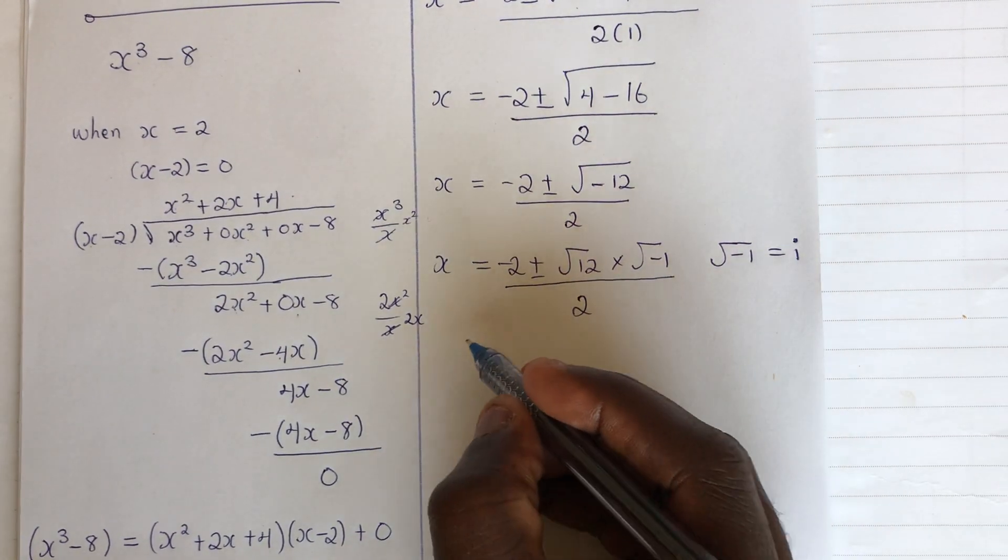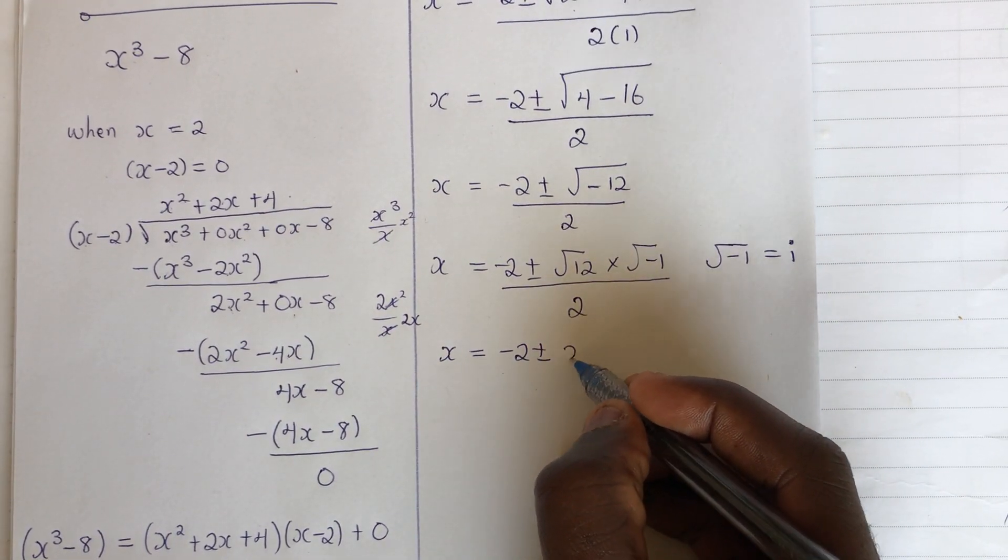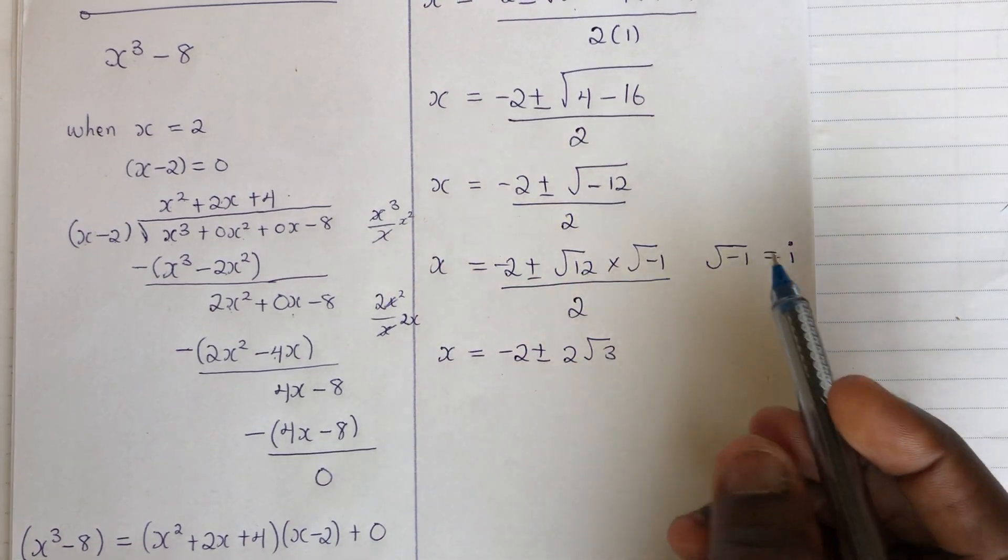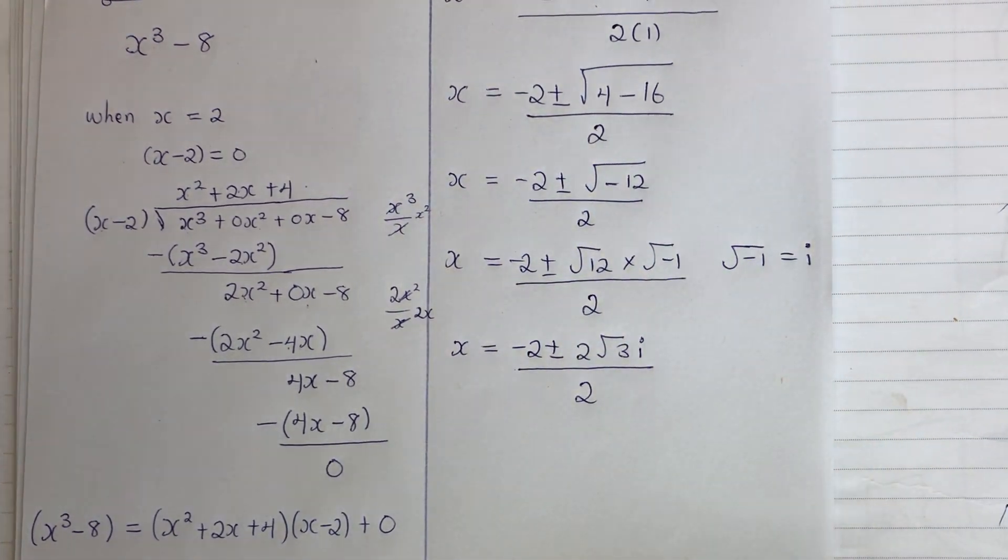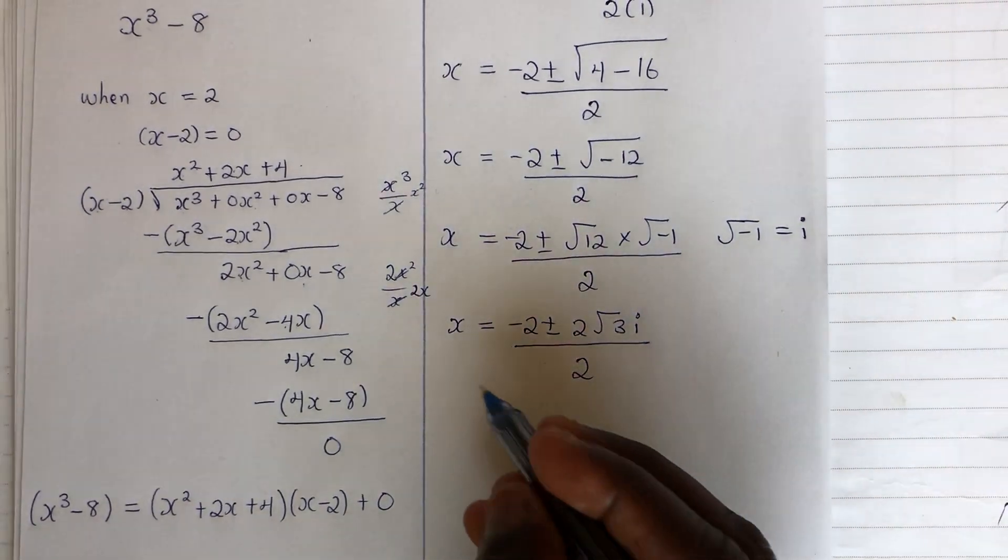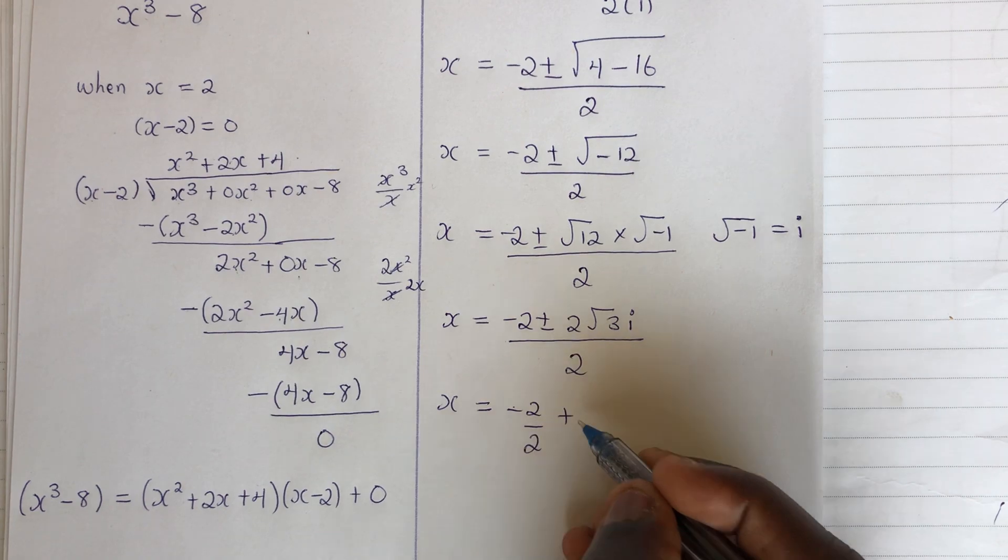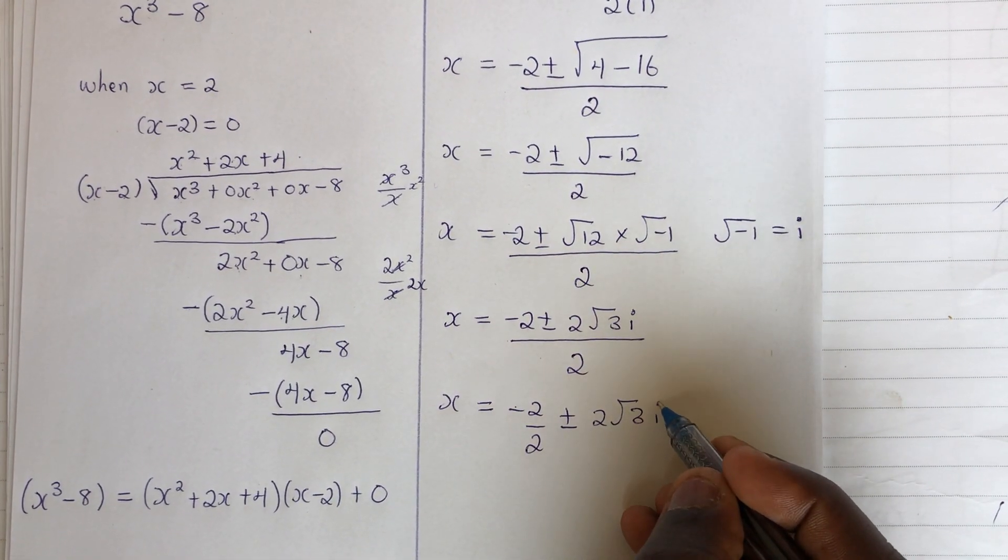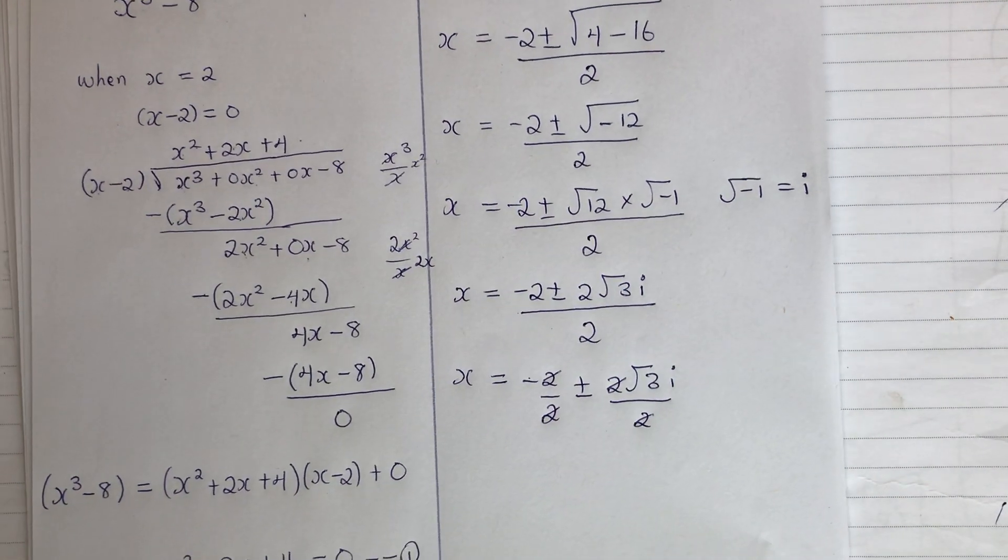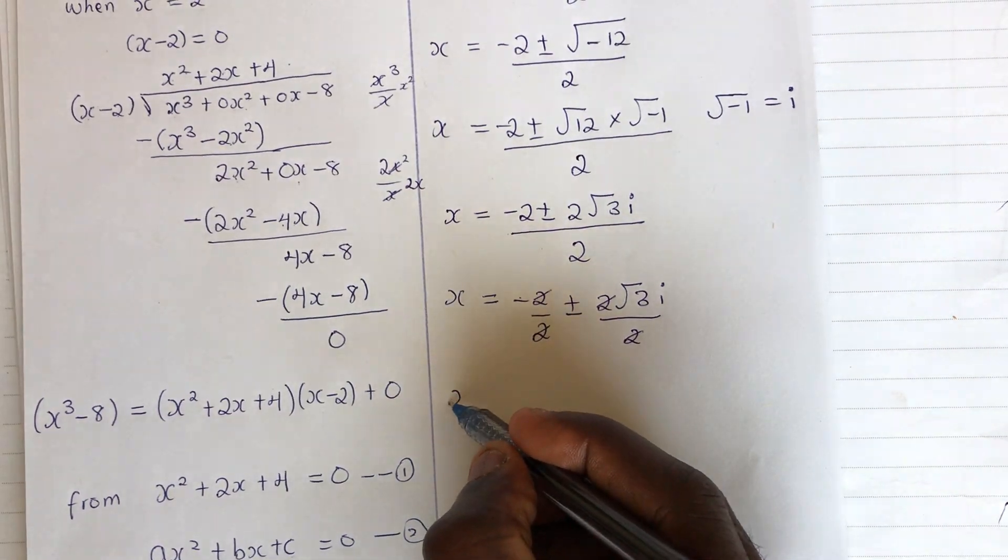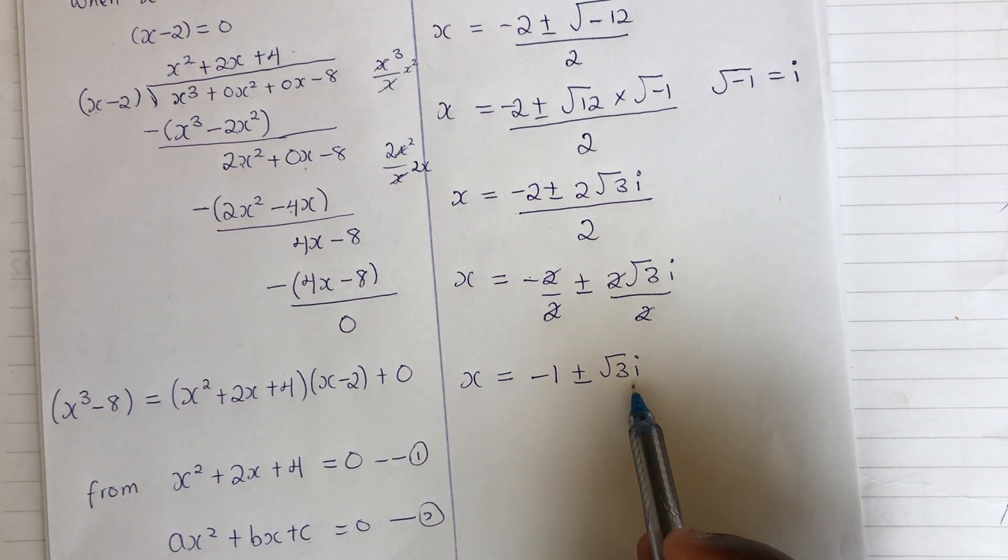Now, punch root of 12 on your calculator. We have x equals minus 2, plus or minus 2 root of 3. So when you punch this, you have 2 root of 3 times i, which is this, all divided by 2. Now, we can break this down by saying x equals minus 2 over 2, plus or minus 2 root of 3i all over 2. This will take care of this. This will take care of this. So, we have x equals minus 1, plus or minus root of 3i.